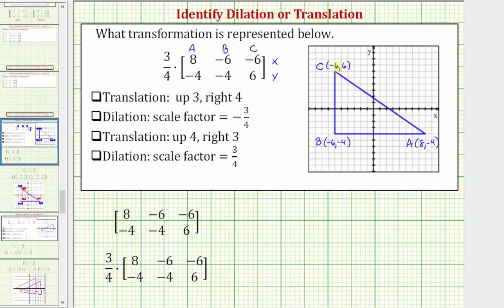For the point C, from the origin, we would go left six units because the x-coordinate's negative six, and then we would go up six units because the y-coordinate is positive six.